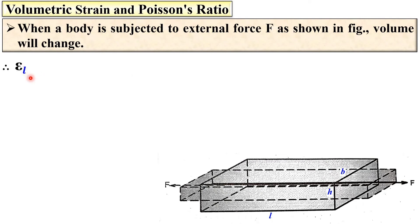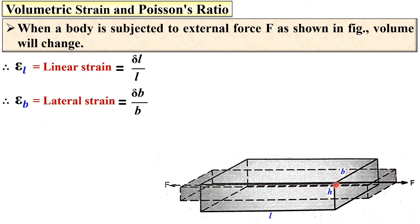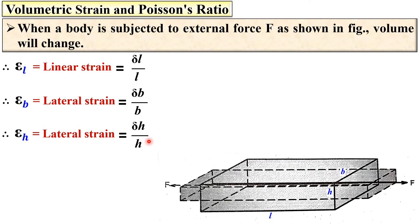Epsilon L denotes the strain in L, which is called the linear strain due to the application of force F. Epsilon L is the linear strain and equals change in length upon original length. Perpendicular to the loading direction, if a parameter changes, it is considered lateral strain — the change in width is lateral strain, equal to delta W upon W. Similarly, change in edge H, which is also perpendicular to the direction of loading, is also called lateral strain, so epsilon H equals delta H upon H.